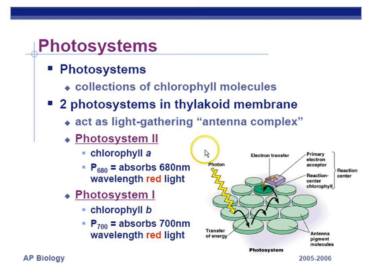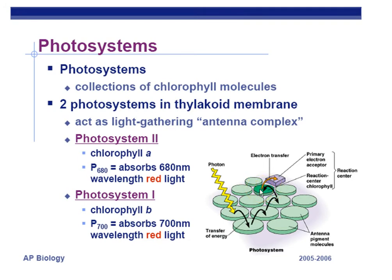A photon of light bounces around antenna pigment molecules and is eventually transferred to an electron via the chlorophyll. Chlorophyll captures energy in the form of high-energy electrons and photons and transfers it to a carrier protein.